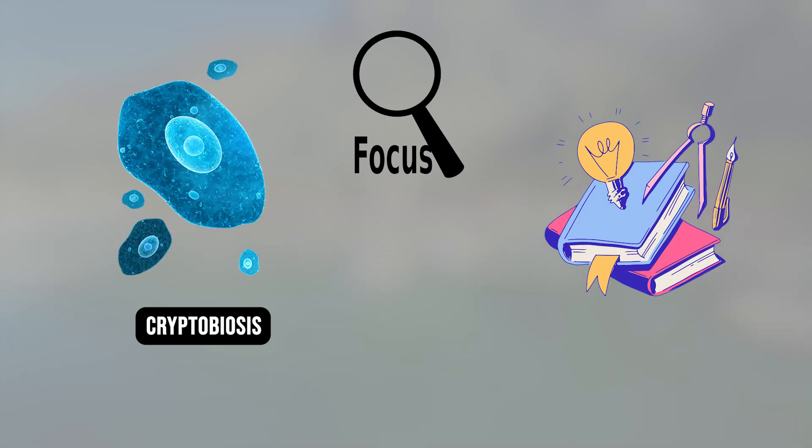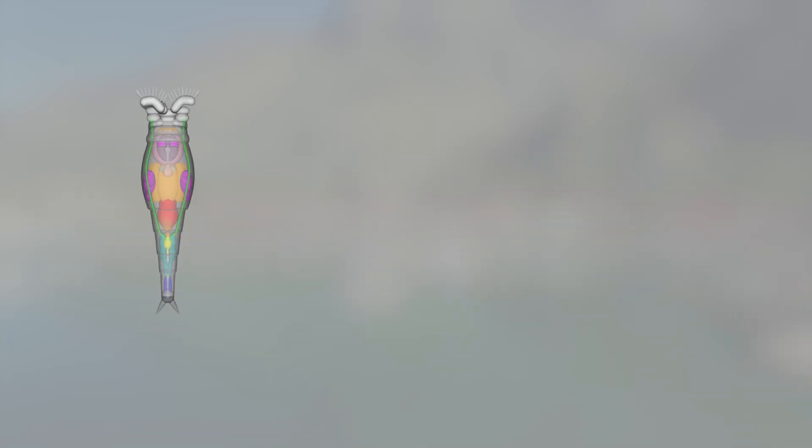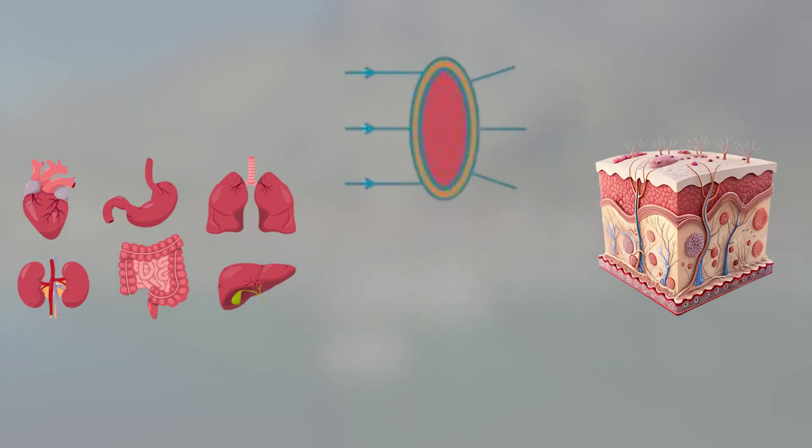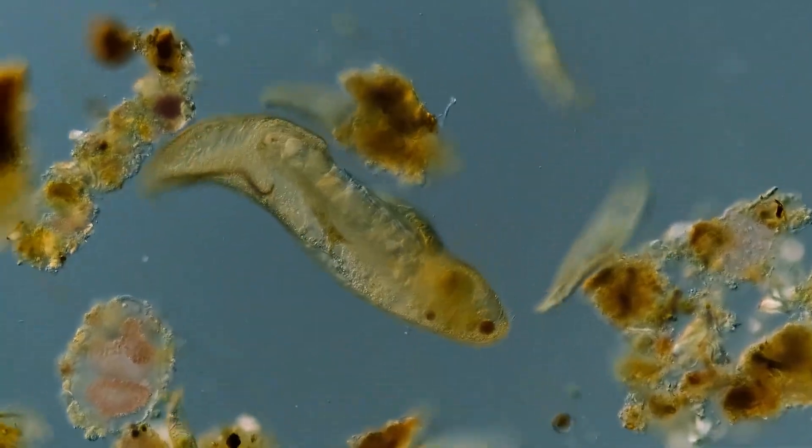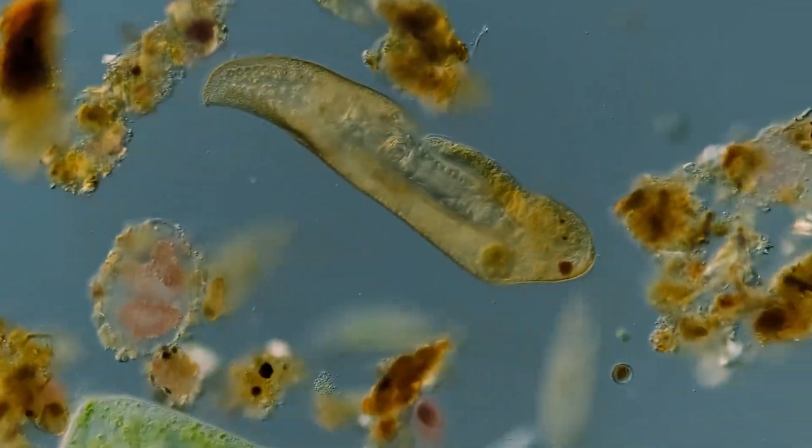Until now, most cryptobiosis studies focused on single-celled organisms. Simple life can hibernate, but rotifers are animals with organs, tissues, and interdependent systems. Coordinating a return from that kind of shutdown was believed to be impossible.